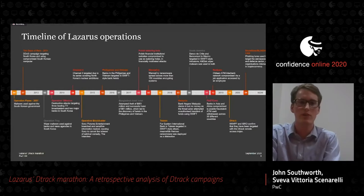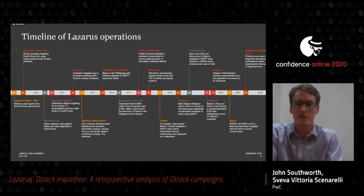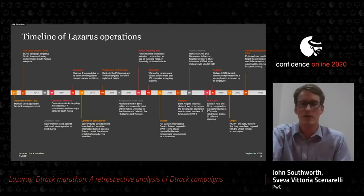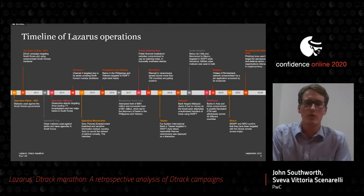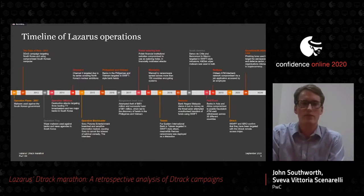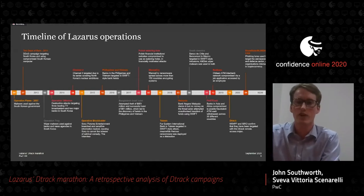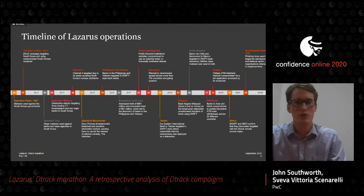We've mapped out a timeline of some well-known Lazarus Group campaigns. Early on, campaigns were more focused on sabotage, such as Operation Flame and Operation Troy, targeting South Korea. Moving through the timeline, there are more espionage-focused campaigns such as Operation Blockbuster, and then increasingly cybercrime-focused campaigns such as the Bank of Bangladesh heist and targeting of the Bank of Chile. Getting to the modern day, we start on the topic of this presentation, which we began tracking in late 2019, where the Lazarus Group used a tool known as D-Track.